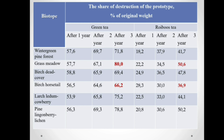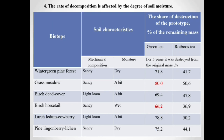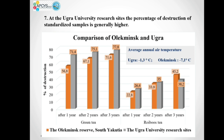Tables on slides 12 to 15 show how the rate of decomposition depends on different environmental factors, such as the number of microorganisms in the soil and the degree of soil moisture. This figure shows comparative characteristics of tea sample decomposition in the conditions of Alekminski Nature Reserve biotopes and the UGRA University research sites.